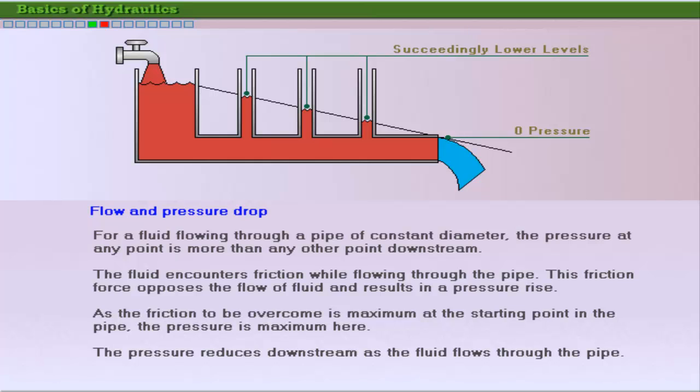Here, the pressure is maximum at the start of the pipe, because the friction that must be overcome is maximum at this stage. Similarly, the pressure at the end of the pipe is minimum, as the friction to be overcome is minimum. The figure here illustrates the principle of pressure drop due to friction. The succeeding pressure drops are shown as decreasing heads in succeeding pipes.